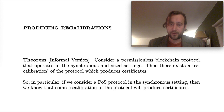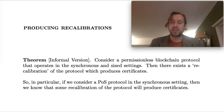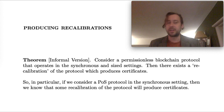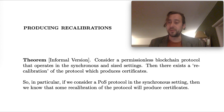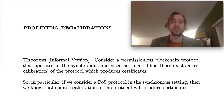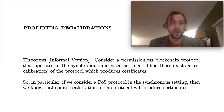Here's our final theorem, stated informally: consider a permissionless blockchain protocol that operates in the synchronous and sized settings. Then there exists a recalibration of the protocol which produces certificates. A recalibration basically means it's the same protocol but used with a different notion of confirmation. In particular, for proof-of-stake protocols in the synchronous setting, some recalibration of the protocol will produce certificates. So even if we consider a longest-chain protocol like Snow White, we can adjust the notion of confirmation away from the longest-chain rule so that the protocol produces certificates. This has led our research program to naturally explore a non-standard part of the blockchain design space, and that's a good thing — we want to understand the design space as generally as possible, not just through a handful of specific protocols.